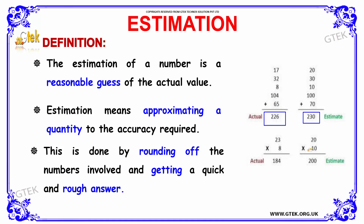Next, we have the multiplication of 23 into 8. The actual answer is 184. Rounding off the numbers to the nearby values as 20 and 10, we get the value as 200, which is the estimate — the nearby value of the multiplied answer. This is how we do estimation.